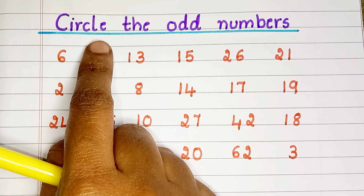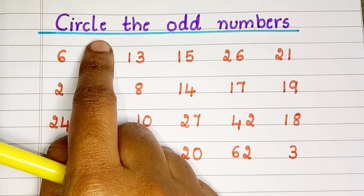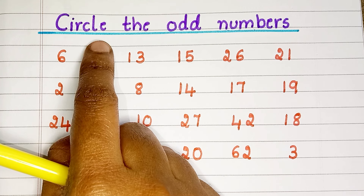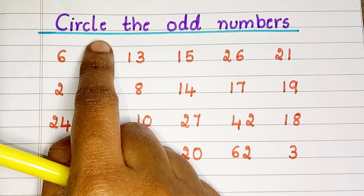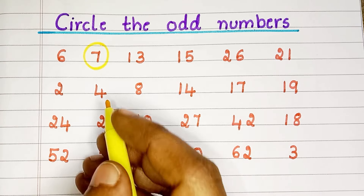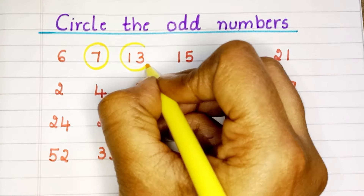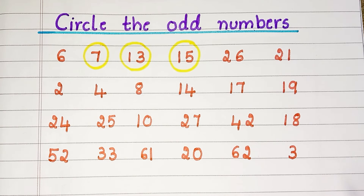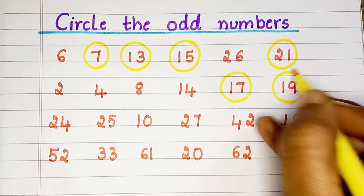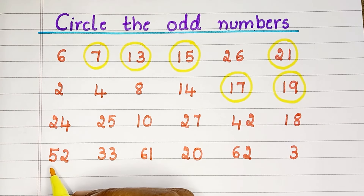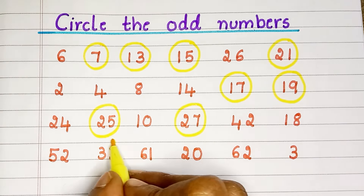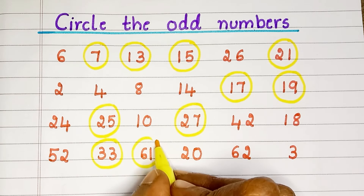Circle the odd numbers. An odd number is a number which is not divisible by 2. If an odd number is divided by 2, it leaves a remainder of 1. Examples of odd numbers: 7, 13, 15, 21, 17, 19, 25, 27, 33, 61, 3.